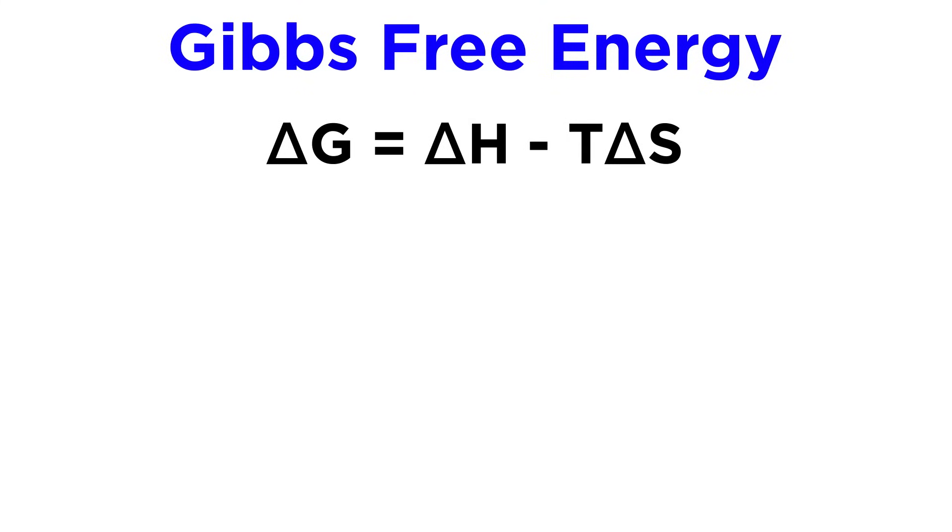Let's recall that delta G equals delta H minus T delta S. This doesn't have to measure a change in a system, we can also just say that G equals H minus TS.